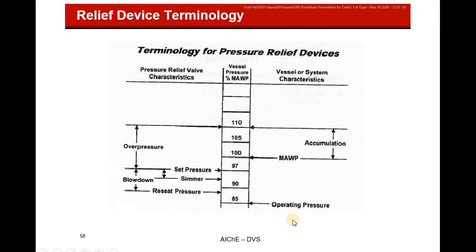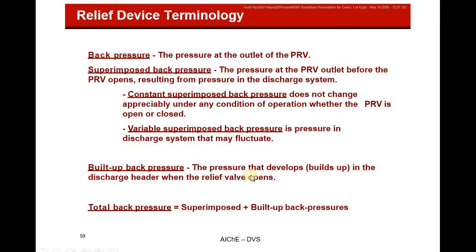In a properly designed valve: you know the operating pressure, set pressure (where it opens), and the maximum allowable pressure. Accumulation can build above the MAWP. When pressure drops, it goes down about 4% before the valve reseats. The blowdown pressure is the pressure at which the valve reseats and closes.